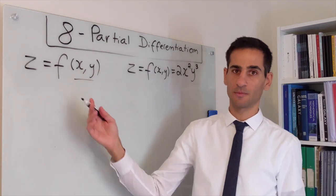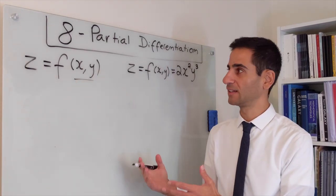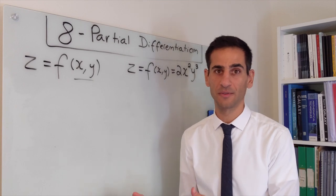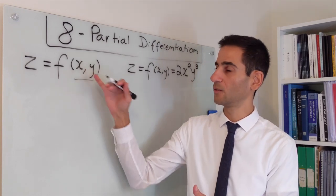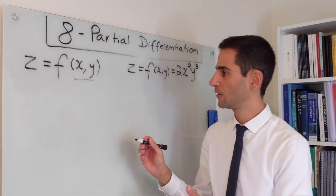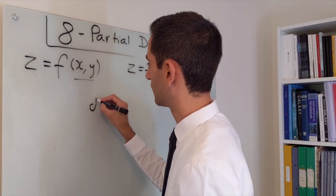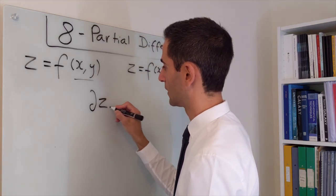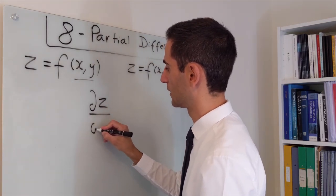Instead, when we have a function of more than one variable we're actually calculating a partial derivative. We're differentiating only when we're changing one variable and we're keeping anything else fixed. We're going to use the curved d, and in this case we would be calculating...